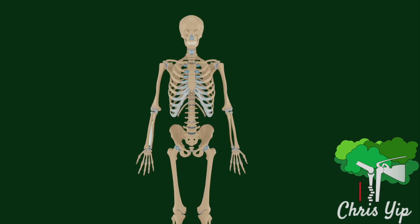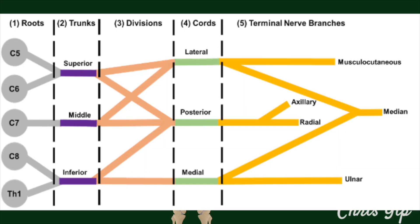The median nerve originates from the brachial plexus. Unlike other main nerves of the upper limb, it is formed by the union of two cords: the lateral root of the lateral cord and the medial root of the medial cord.